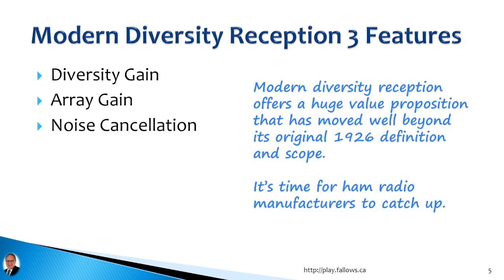Modern diversity reception has three features. The first is diversity gain. Second is array gain with two antennas. And the third is noise cancellation. It's a huge value proposition that has moved well beyond the original 1926 diversity gain definition and scope, and it's time for the ham radio manufacturers to catch up.